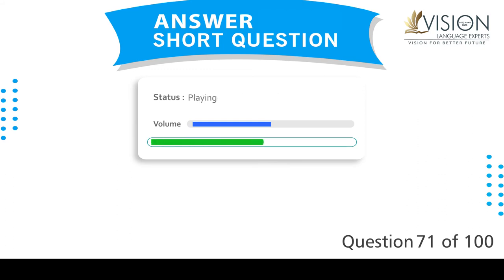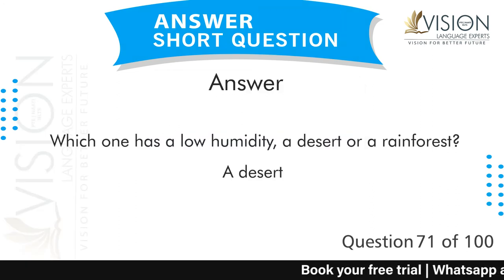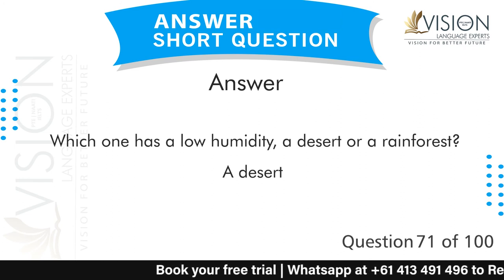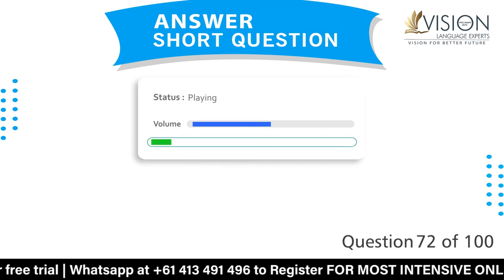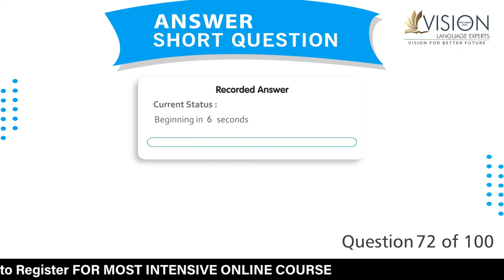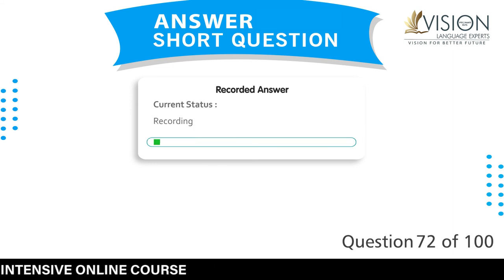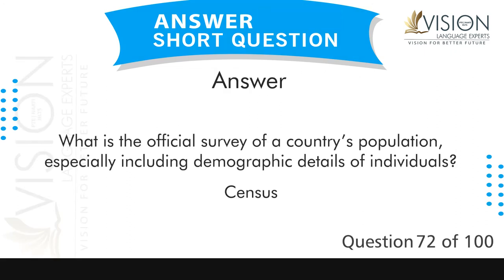Which one has a low humidity, a desert or a rainforest? A desert. What is the official survey of a country's population, especially including demographic details of individuals? Census.